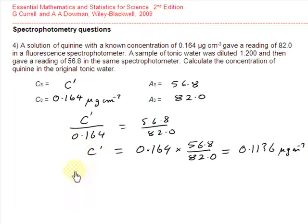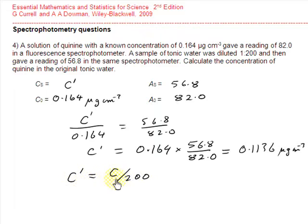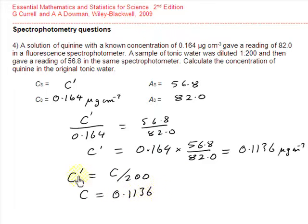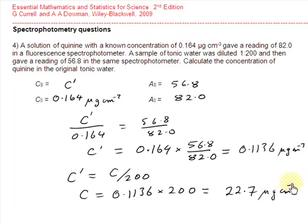We know this diluted solution C-dash was obtained by diluting an initial concentration C by a factor of 200, so C-dash equals C divided by 200. Rearranging, the concentration of the initial tonic water equals C-dash of 0.1136 multiplied by 200, giving a concentration of 22.7 micrograms per centimetre cubed.